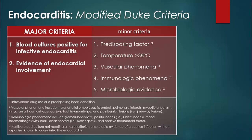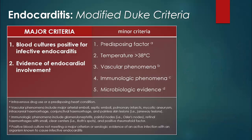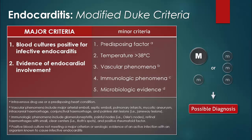A definite diagnosis of infective endocarditis can be made with certain combinations of the criteria mentioned. The diagnosis is considered possible if one major and one minor criteria are met, or if three minor criteria are met. The diagnosis is rejected if only two minor criteria or less are present.